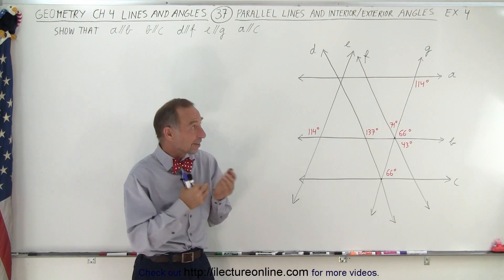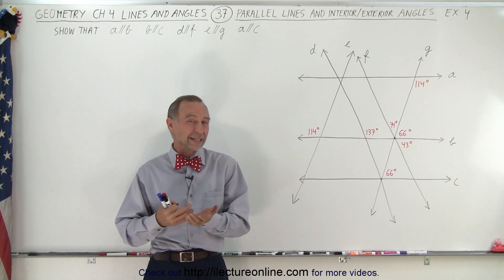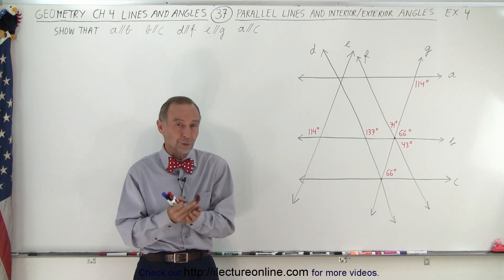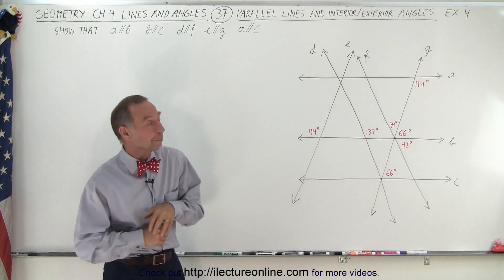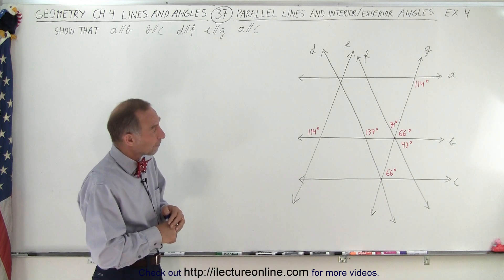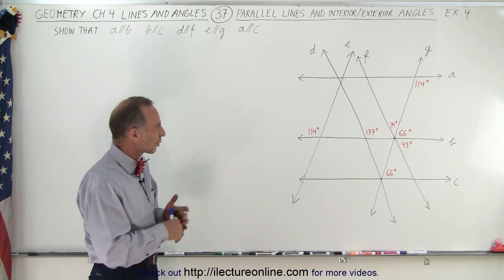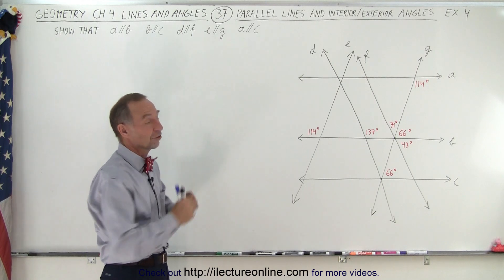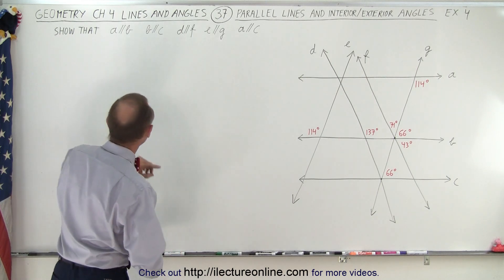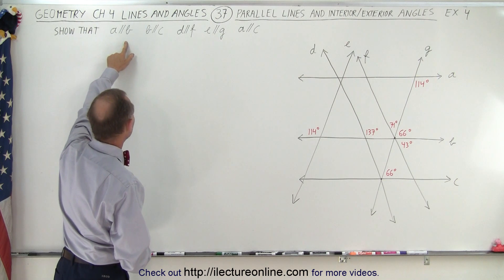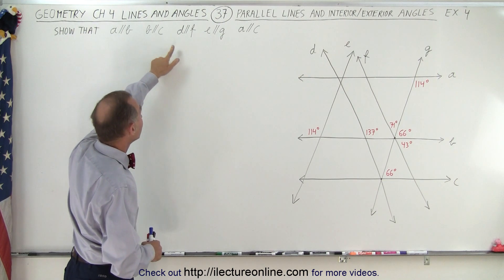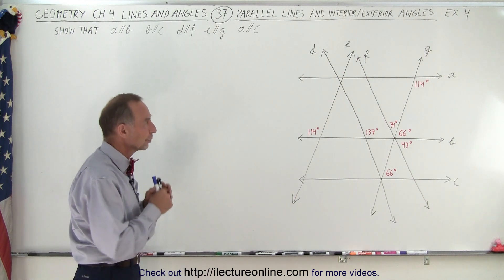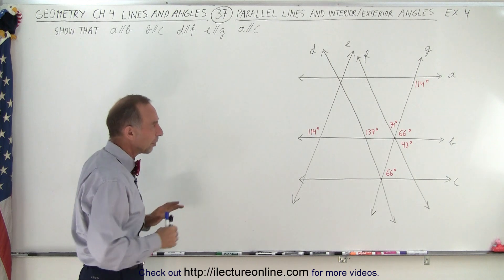Welcome. Our next example deals with corresponding interior and corresponding exterior angles relative to parallel lines. This is an interesting and challenging example — it's like doing a crossword puzzle, because you need to keep adding information in order to make decisions. What we're trying to determine is whether lines A and B, B and C, D and F, E and G, and A and C are parallel to one another based on what is given.